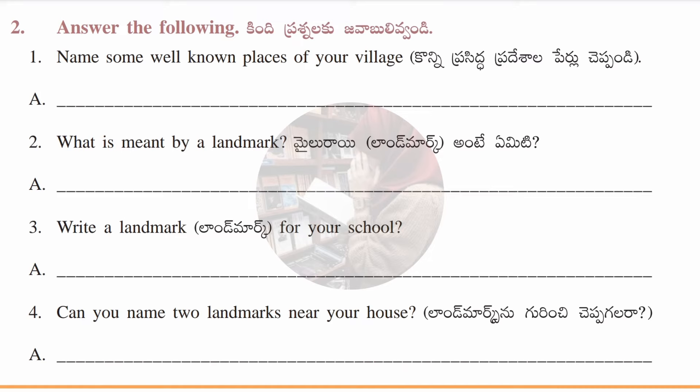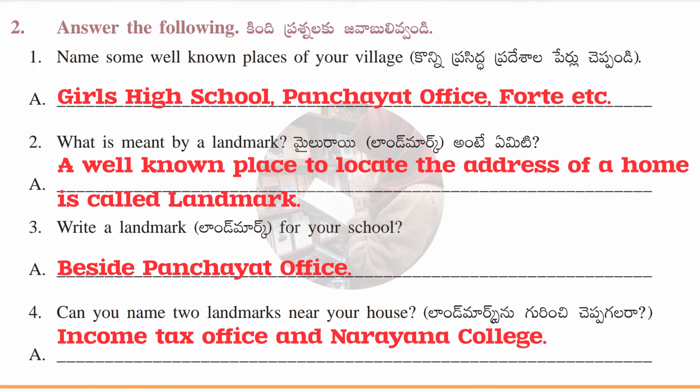Question and answers: First — name some well-known places of your village. Answer: girls high school, panchayat office, and fort, etc. Second — what is meant by a landmark? Answer: a well-known place used to locate the address of a home is called a landmark. Third — write a landmark for your school. Answer: beside panchayat office. Fourth — name two landmarks near your house. Answer: income tax office and Narayan College.